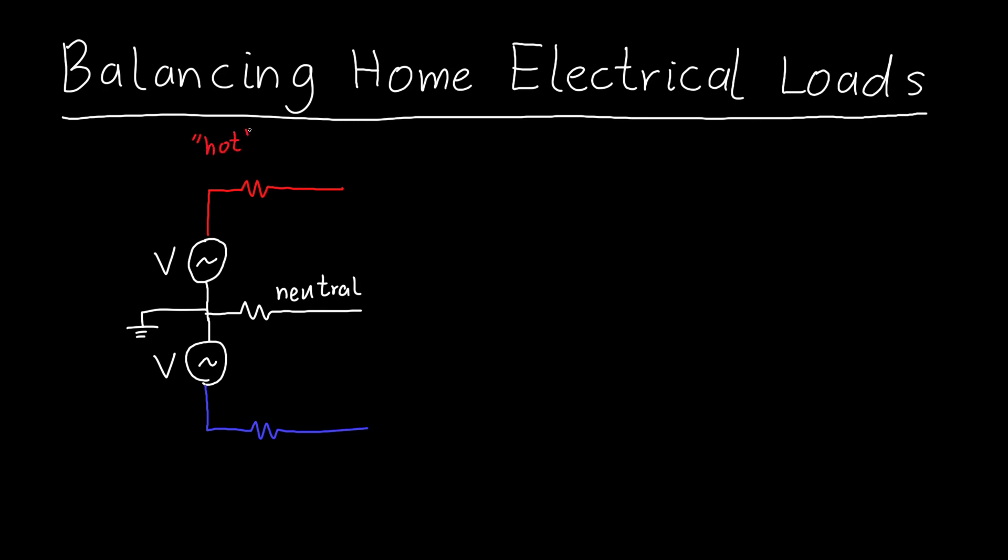There's one on the top and one on the bottom, and importantly because you only have one phase, these two voltages are synced with each other. If the voltage at any given instant on this top wire is plus V, then the voltage on this bottom wire is minus V, and so we can use both of these to connect appliances to.